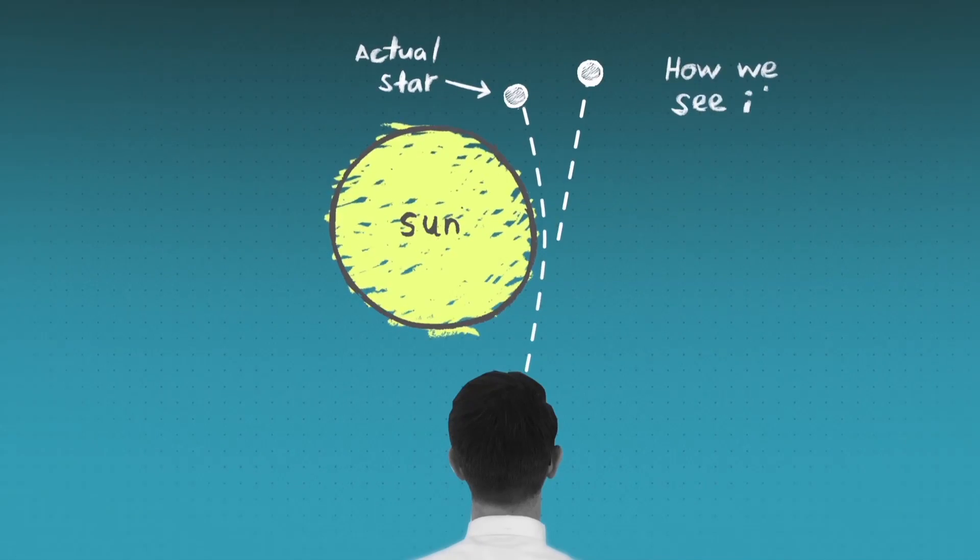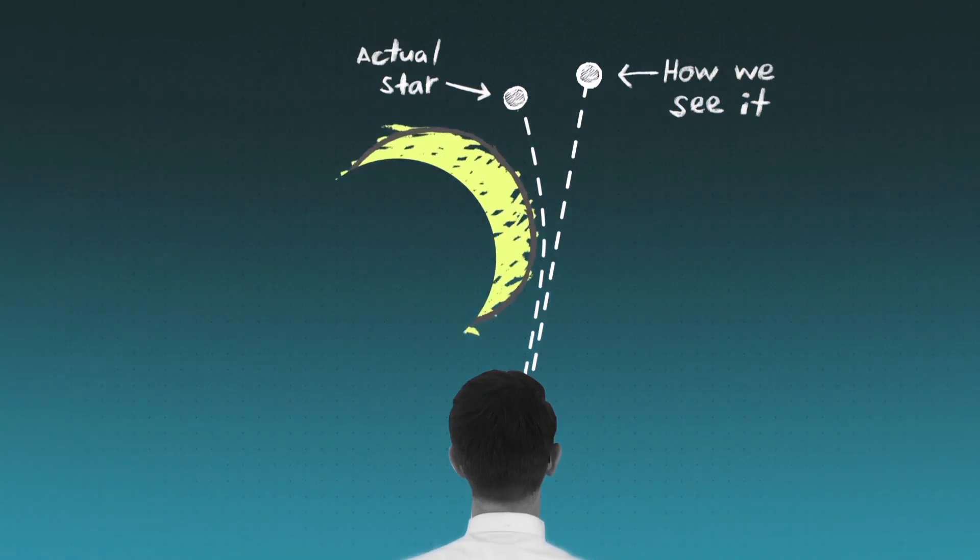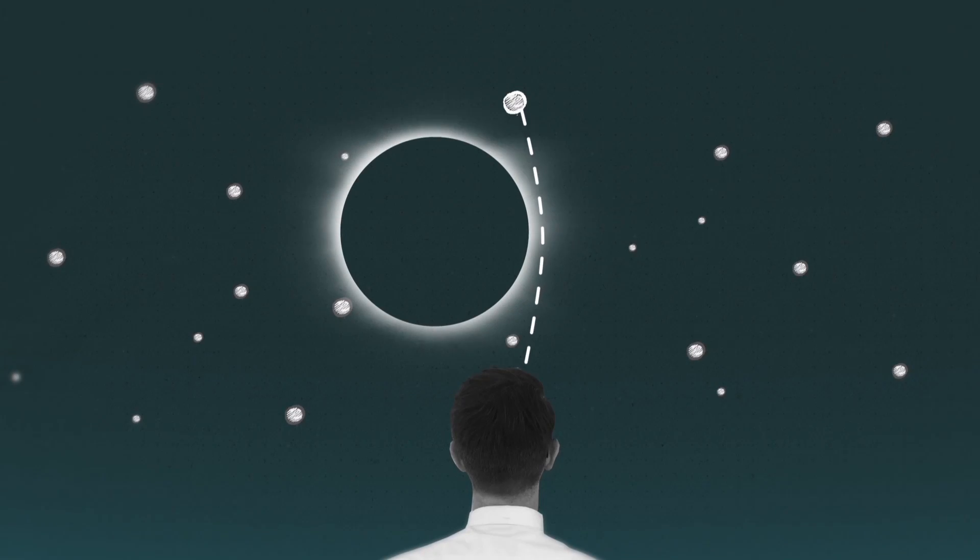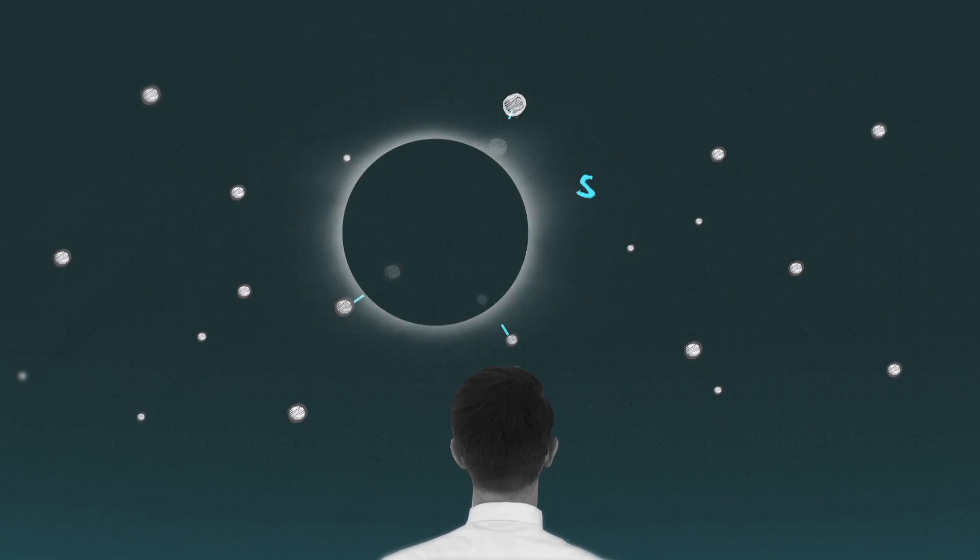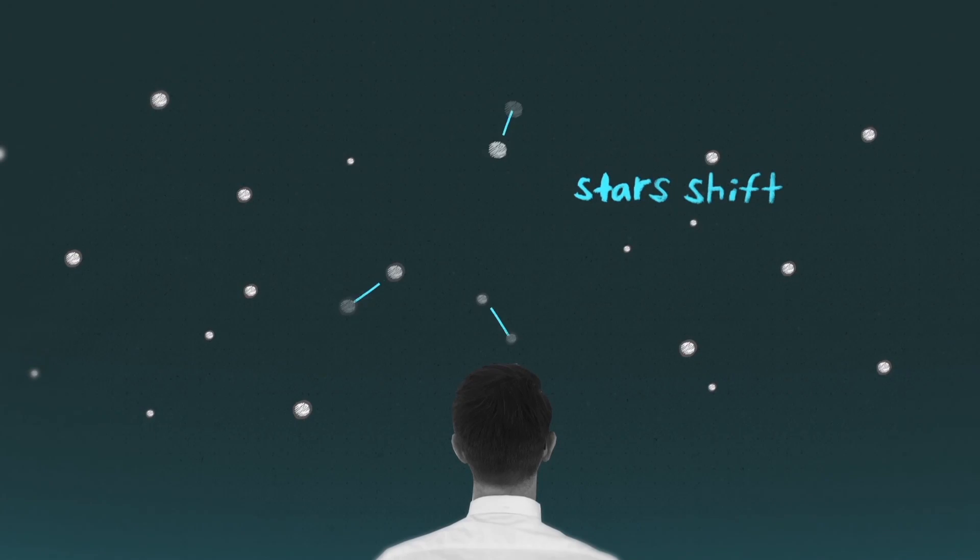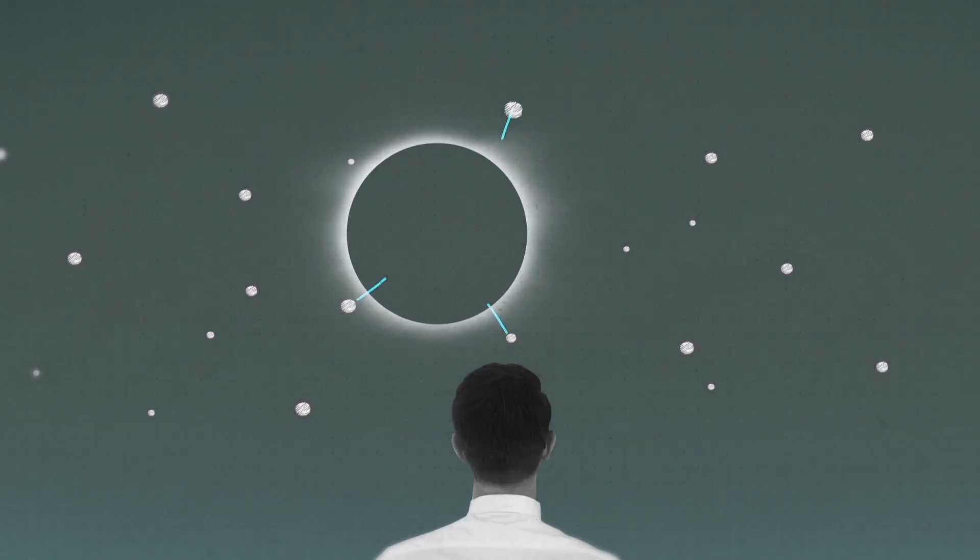Normally, the sun is too bright to see them. But when the moon covers the sun during an eclipse, the stars can be glimpsed briefly. By comparing their positions with a photograph taken at night, Eddington would be able to see if Einstein's theory was correct.